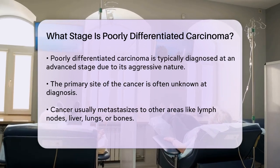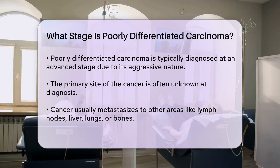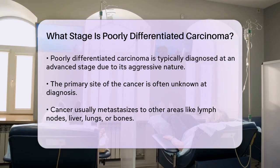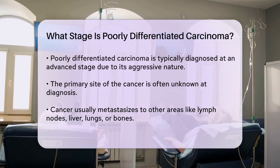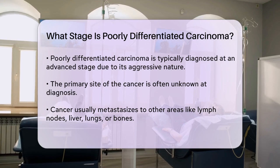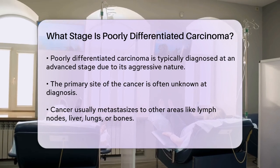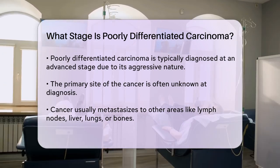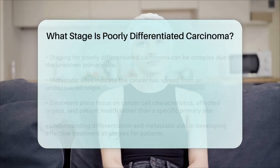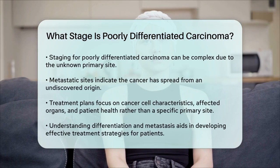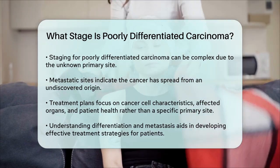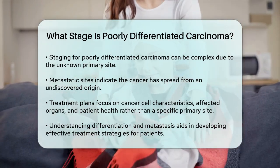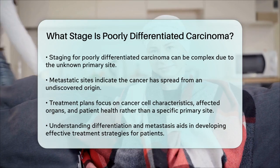Here are some key points. Metastatic sites: the cancer is often found in multiple metastatic sites, indicating it has spread from an unknown primary site. Advanced stage: given its aggressive nature and rapid growth, poorly differentiated carcinoma is typically considered an advanced stage cancer when diagnosed.